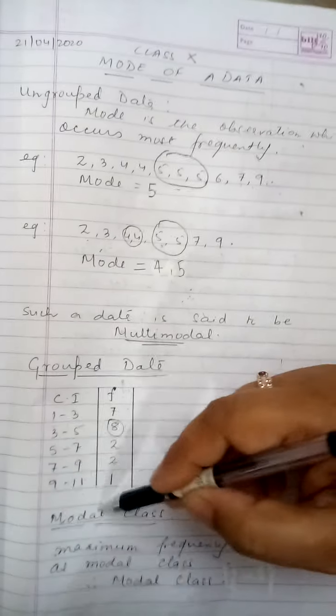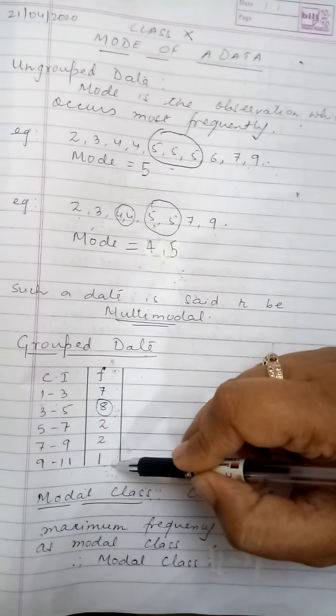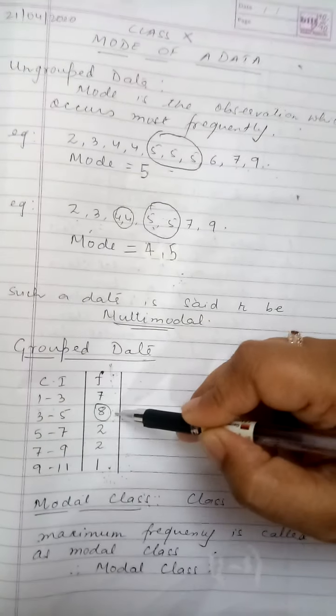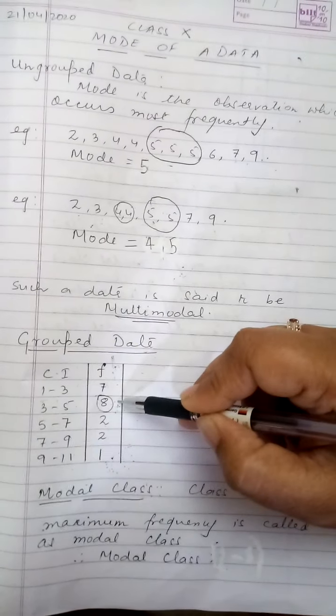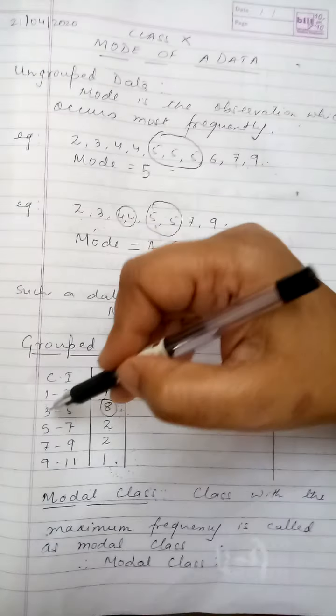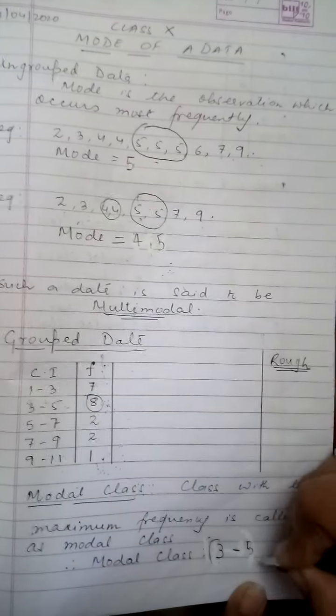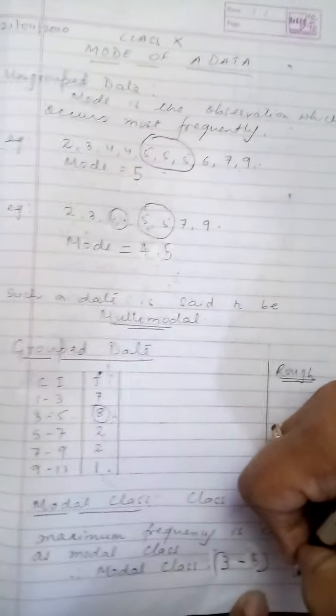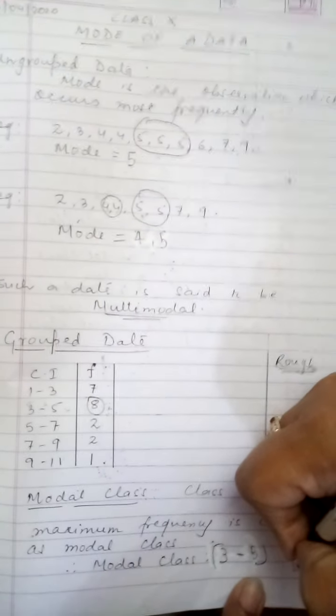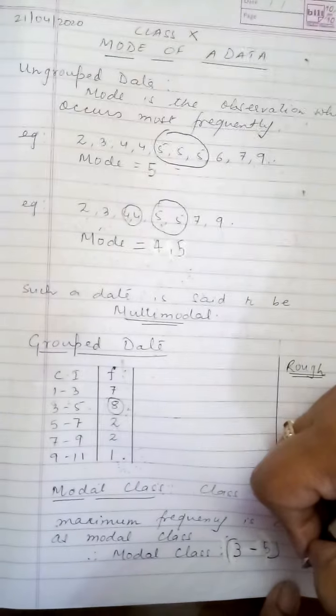Now how do you find the modal class? To find the modal class you will go to the column of frequency, whichever value of frequency is the highest. Here I have encircled 8 because among all these values given here 7, 8, 2, 2, 1, 8 is the largest. So 8 corresponds to the class interval 3 to 5 so my modal class in this question becomes 3 to 5. Now you are supposed to write this modal class in every question you solve in the board exam. Writing the modal class carries marks. If you do not write the modal class you lose marks. Secondly at times you just get a one marker or a two marker question where you are asked only to find the modal class and not solve the question.